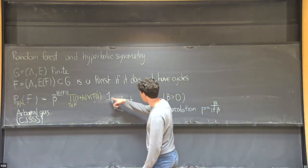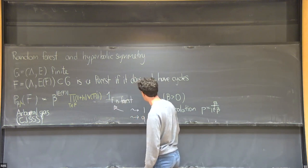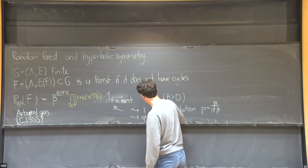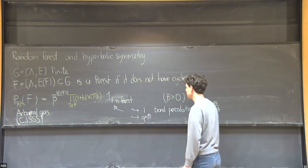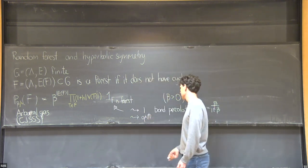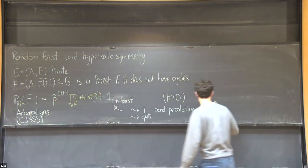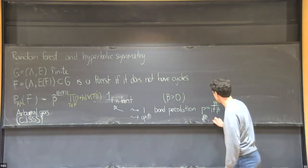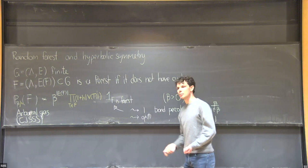Another variation is you replace the indicator function by Q to the number of components of the graph. In this case, you would typically also replace beta by e to the beta minus one, and then this is the random cluster model.